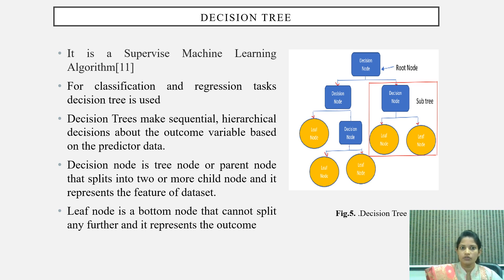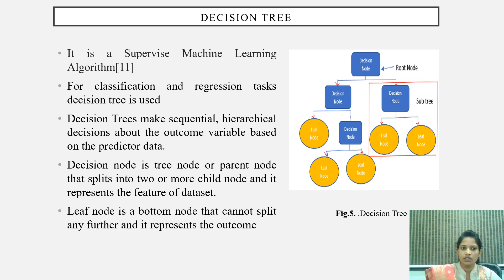Decision tree is also a supervised machine learning algorithm. It is used for both classification and regression problems. Decision tree makes sequential and hierarchical decisions about the outcome variable based upon the predictor data. A decision node is a tree node or parent node that splits into two or more child nodes and represents the features of the dataset. The leaf node is a bottom node that cannot split any further and represents the outcome.